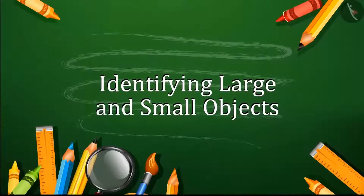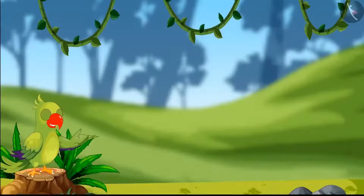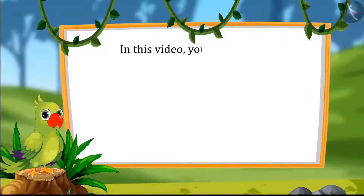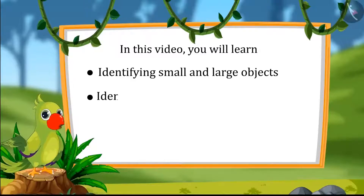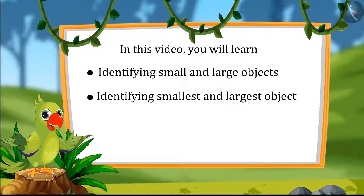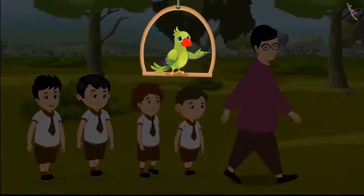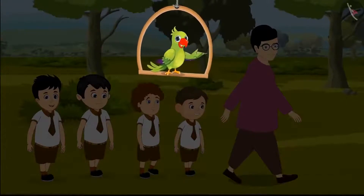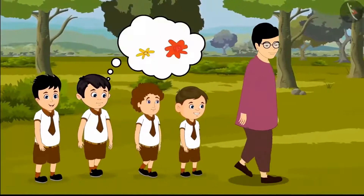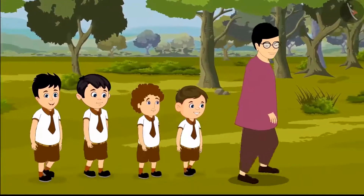Identifying large and small objects. Hello friends, I am a parrot and I welcome you to this lesson. In this lesson, we will learn to identify small and large objects, and identify the smallest and largest objects. Today, Chotu was taken for a walk by the school to a nearby forest and has homework to gather some things and paste them in his notebook. Chotu thought of taking two flowers, two leaves, and two bird feathers from the forest.